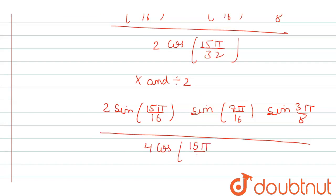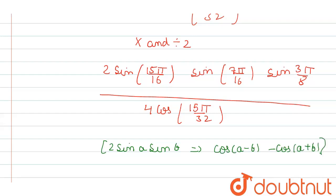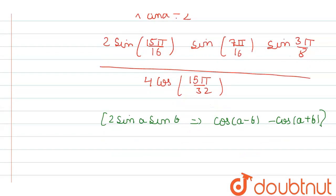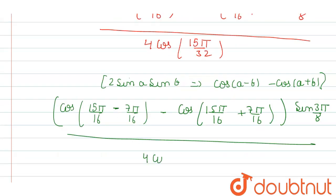As we can see in the numerator, we have the formula 2sinA·sinB = cos(A−B) − cos(A+B). So our term will become cos(15π/16 − 7π/16) − cos(15π/16 + 7π/16) multiplied by sin(3π/8), all divided by 4cos(15π/32).